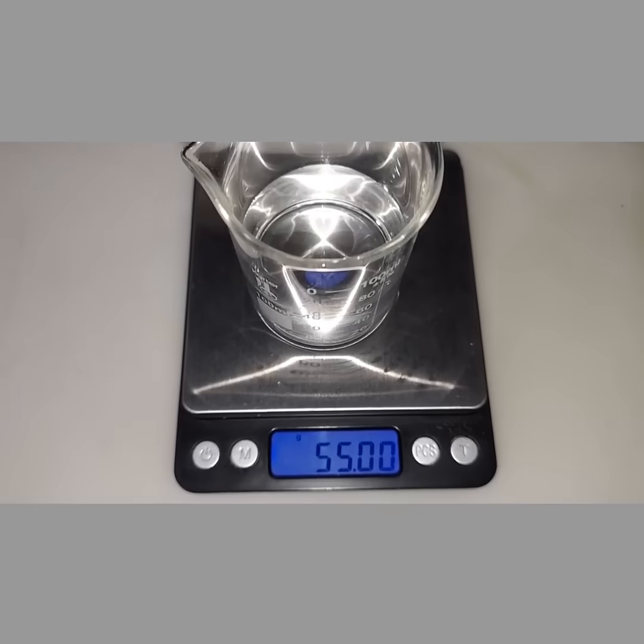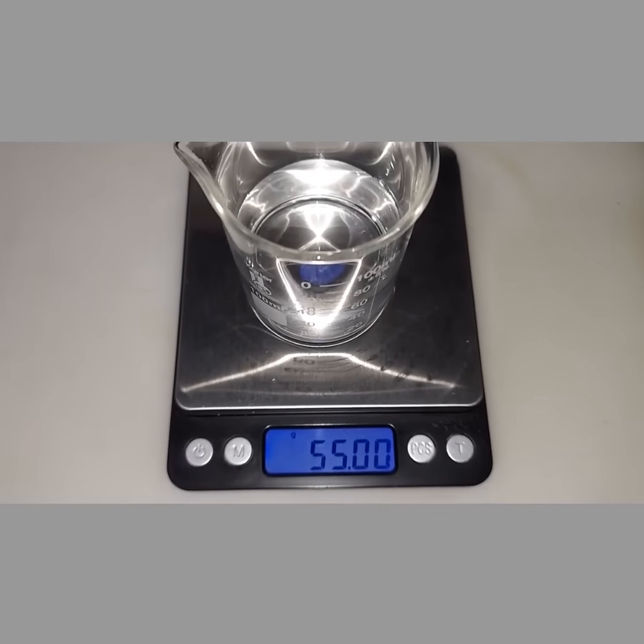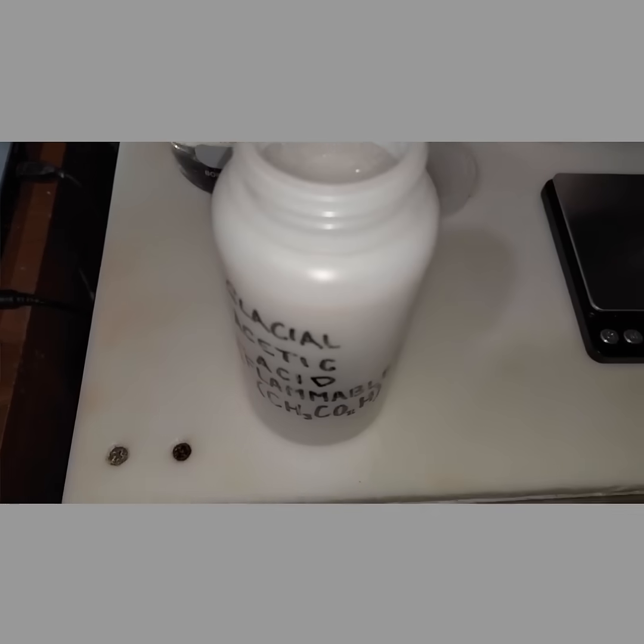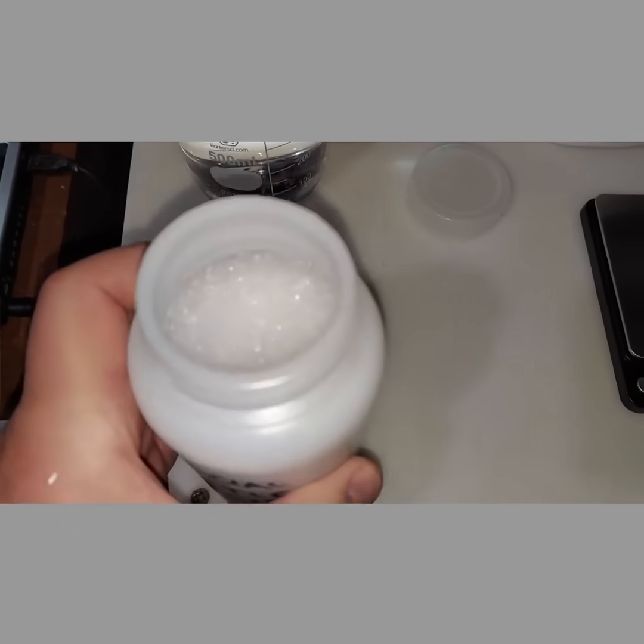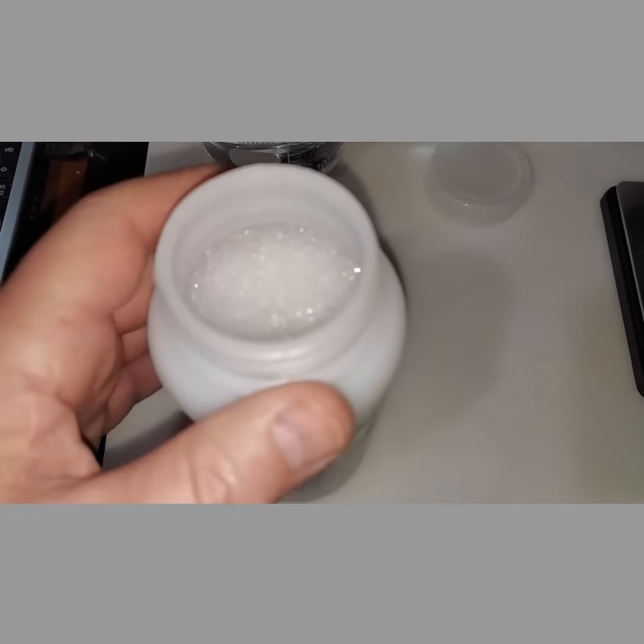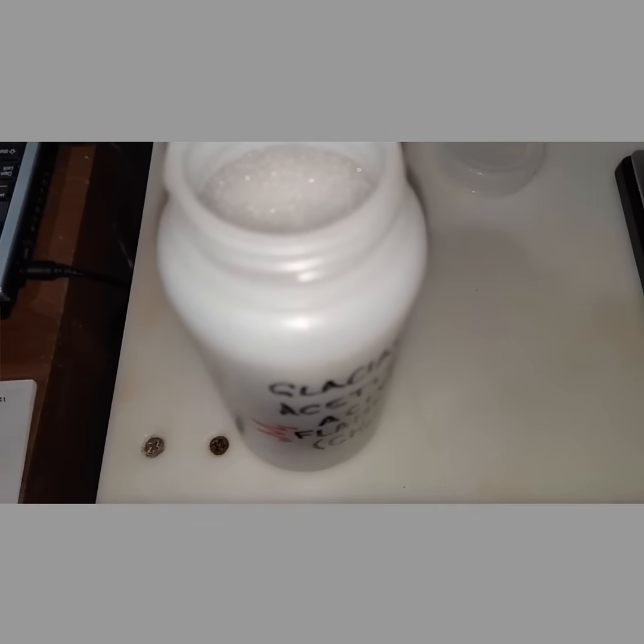To start making our 50% acetic acid solution by weight, we're going to start with 55 grams of water. The interesting thing about glacial acetic acid is that it turns into a solid below 63 degrees Fahrenheit - this is rock hard. It's also flammable, which is pretty interesting. I need to heat this up and then get 55 grams of glacial acetic acid.